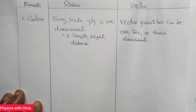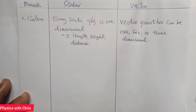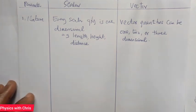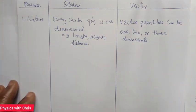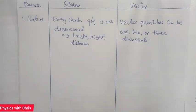Examples of scalar quantities include the height of a body, the length of a body, and the mass of a body. Vector quantities include velocity, displacement, and force.